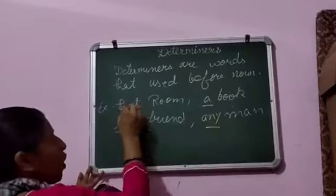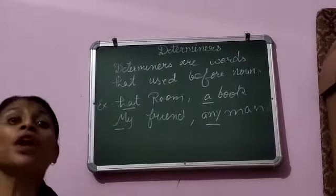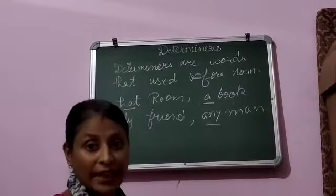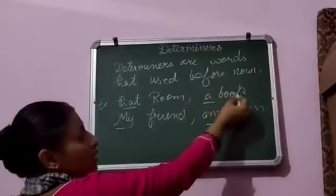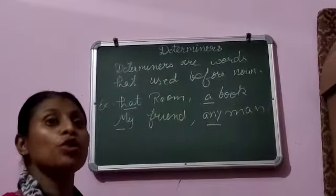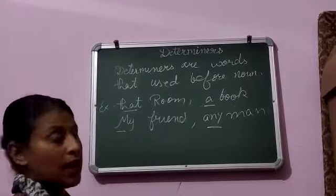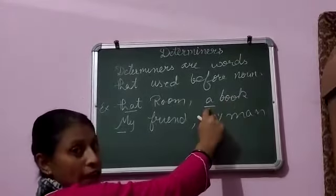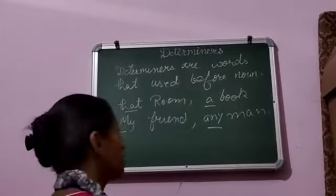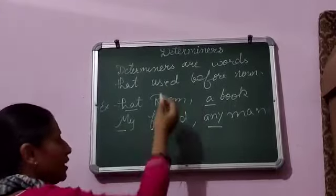These are called determiners. Determiners को हम कहते हैं जो हमें indicate करते हैं और nouns के साथ relate करते हैं। यह sentence को पूरी तरह meaning बताने में help करते हैं। जैसे many books — many क्या होगा, determiner होगा। That room, this room, these rooms — these are the determiners.